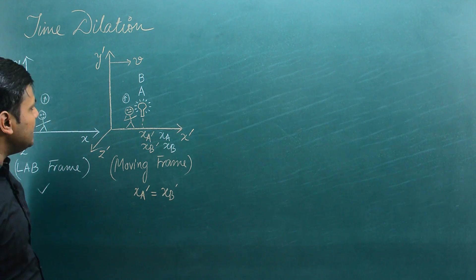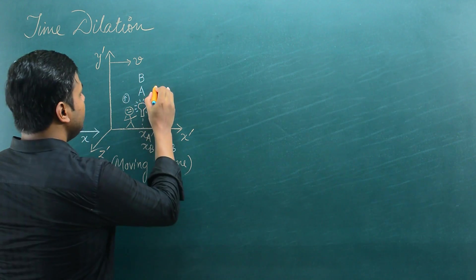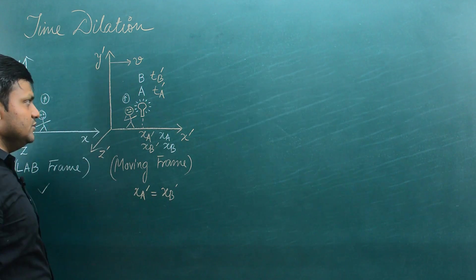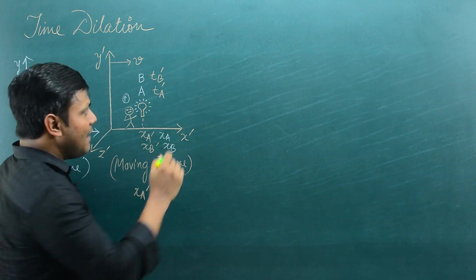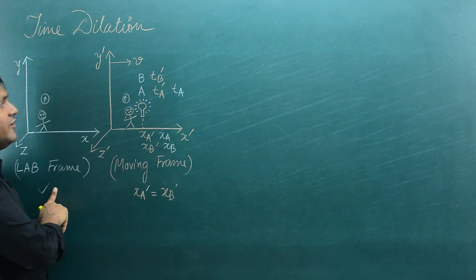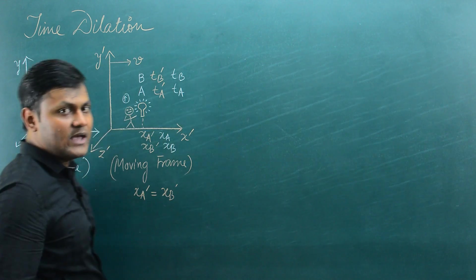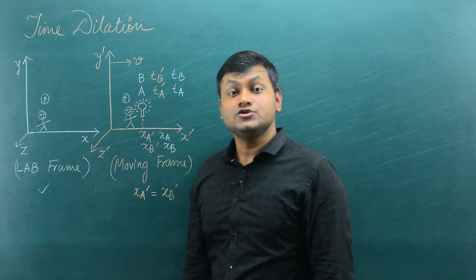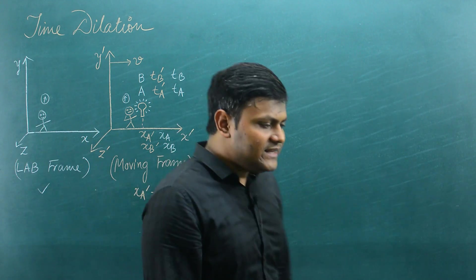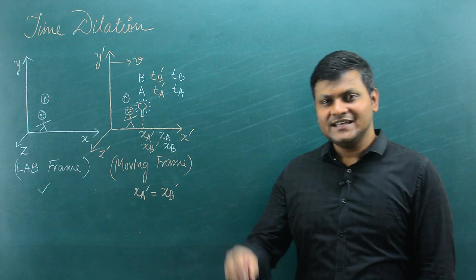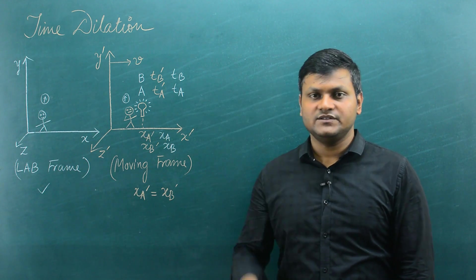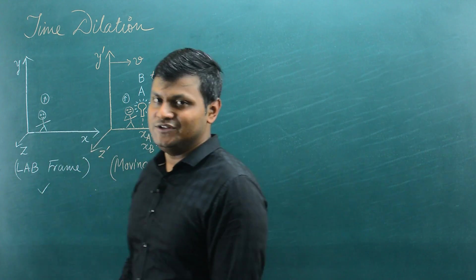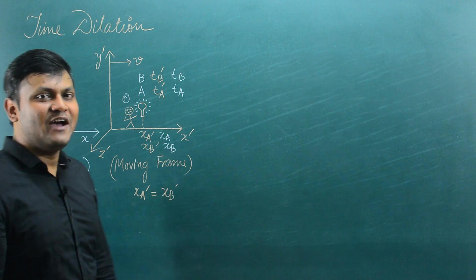The time at which physical event A happens with respect to the moving frame observer is TA', and event B happens at TB'. Similarly, the times for events A and B with respect to the lab frame observer are TA and TB. The coordinates along both the X-axis and the time axis are different for both observers for both physical events. The time period between these two physical events will be different for both observers — that is the most important conclusion to draw.